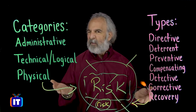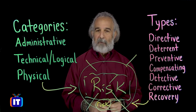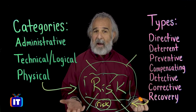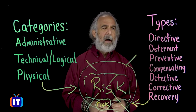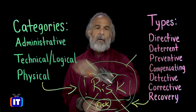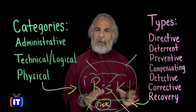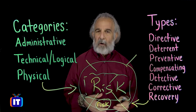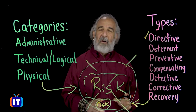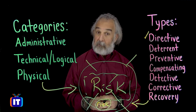Now let's talk about the what — specifically the seven types of controls. Starting at the top with directive controls: these provide guidance aligned primarily with the administrative category. They're very likely policy-driven and give us specific guidance aligning us with requirements the organization has laid out. They tell us to do something and may or may not explain why it's important.